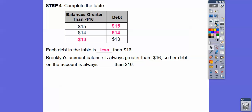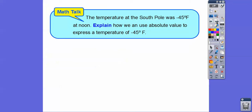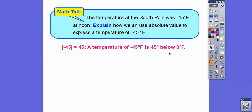Brooklyn's account balance is always greater than negative $16, so her debt on the account is always less than $16. Remember, debt is an absolute value answer. The temperature at the South Pole was negative 45 degrees Fahrenheit at noon. The absolute value of negative 45 is equal to 45. A temperature of negative 45 degrees means we are 45 degrees below zero. When talking about below zero, that's the absolute value of a negative temperature.